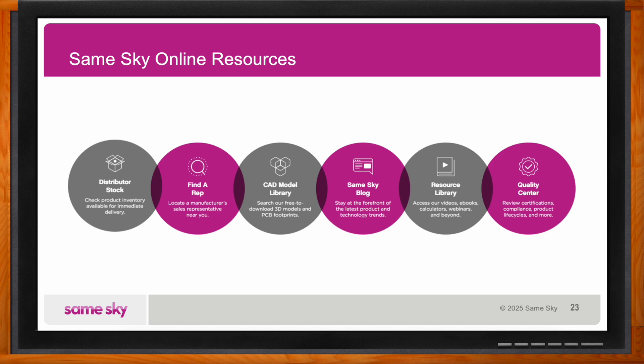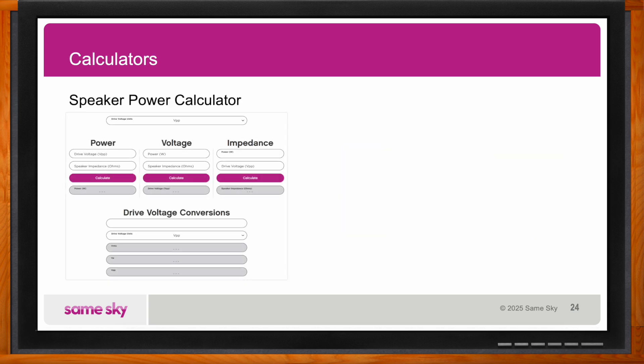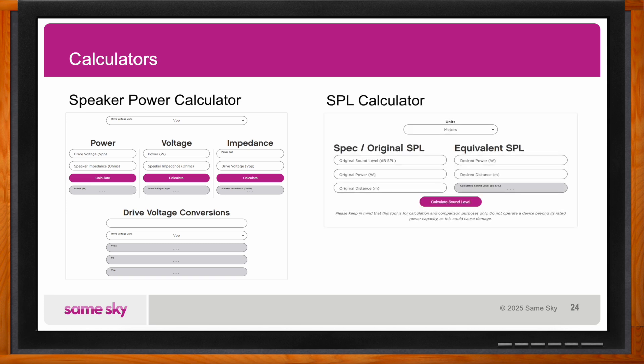Using our website, you have the ability to check current stock with our authorized distributor, get in contact with a sales representative near you, and access 3D models — available for most speakers and upon request. We also have our SameSky blog covering a variety of helpful topics, many of which address speakers. Beyond the blog, we have videos, e-books, calculators, and more. We have two great calculators: a speaker power calculator for common conversions and calculations useful in speaker selection, and an SPL calculator for converting sound levels to various distances and power levels.